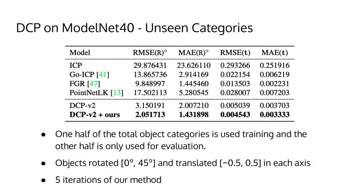Here we show some quantitative results for Deep Closest Point in its test within seen object categories. In this experiment, one half of the dataset's object categories are used for training while the other half is used for evaluation, testing the network's capacity for generalization. Objects are rotated anywhere between 0 to 45 degrees with translation in the range of -0.5 to 0.5 along each axis.